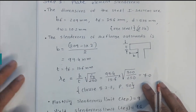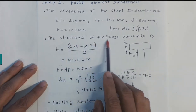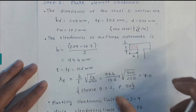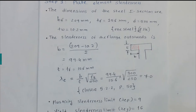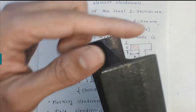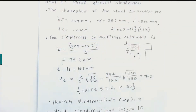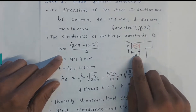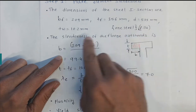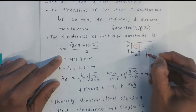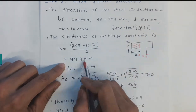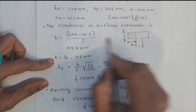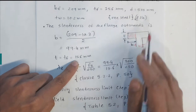Now we calculate the slenderness of the flange outstand. The outstand is the portion of the flange projecting beyond the web. The outstand width B = (BF − TW) / 2 = (209 − 10.2) / 2 = 99.4 mm. The flange thickness TF = 15.6 mm.